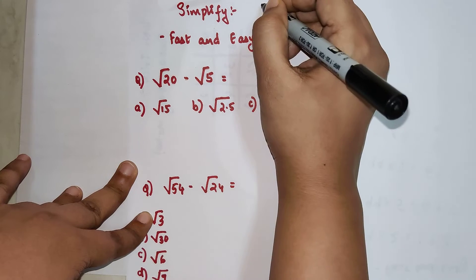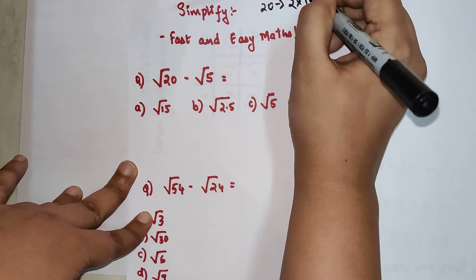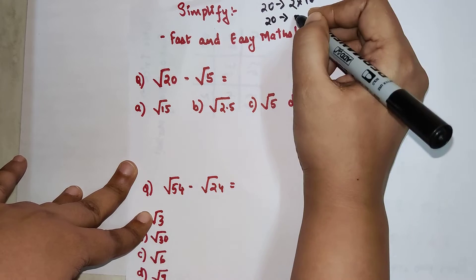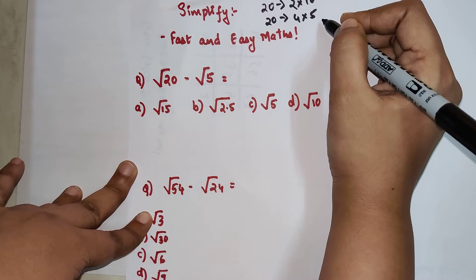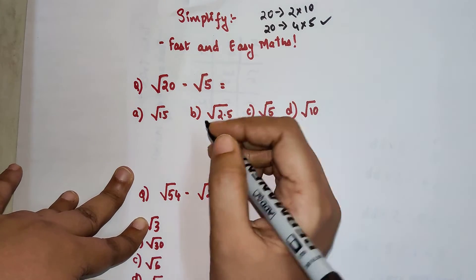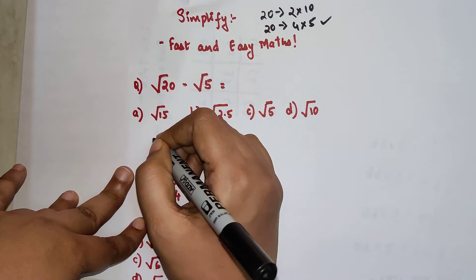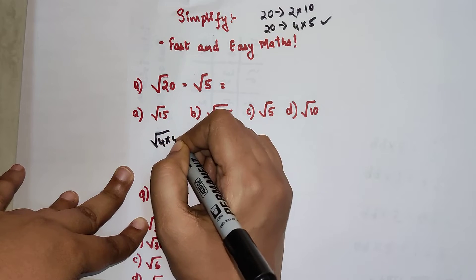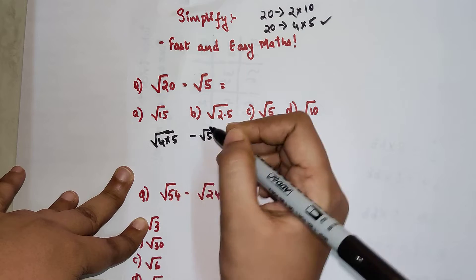Please understand: 20 could be written as 2 into 10, and it can also be written as 4 into 5. Out of these two, we will select 4 into 5 because 4 is a perfect square. So this will be nothing but root of 4 into 5, minus root 5.